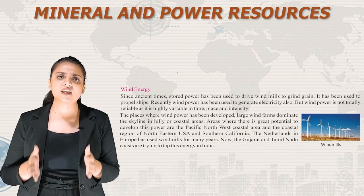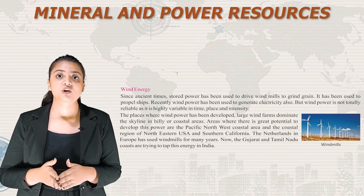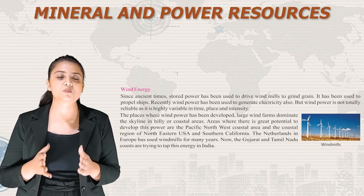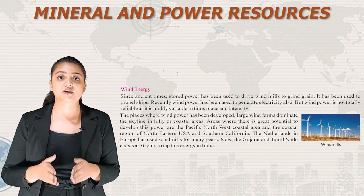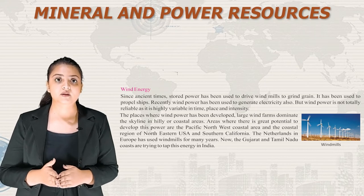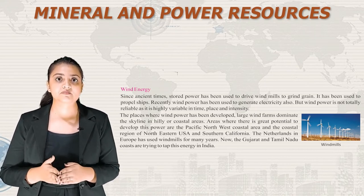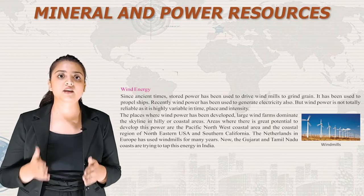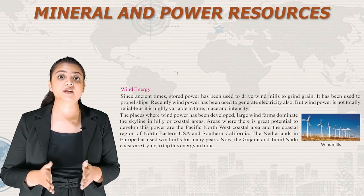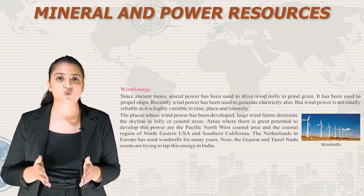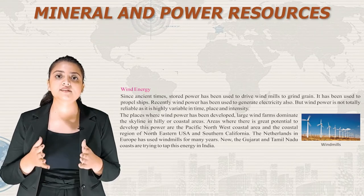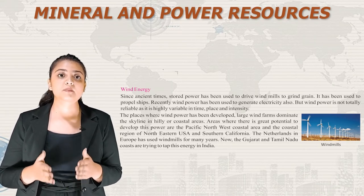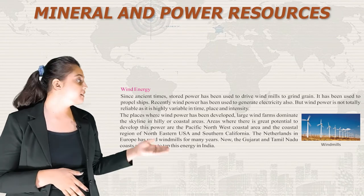Second is wind energy. Since ancient times, wind power has been used to drive windmills to grind grain and propel ships. Recently, wind power has also been used to generate electricity. However, wind power is not totally reliable as it is highly variable in time, place and intensity. Where wind power has been developed, large wind farms dominate the skyline in hilly or coastal areas. Areas with great potential include the Pacific Northwest coastal area, the northeastern USA coastal region and Southern California. The Netherlands has used windmills for many years. In India, the Gujarat and Tamil Nadu coasts are trying to tap this energy. Here is an image of windmills.